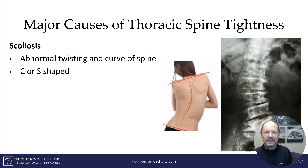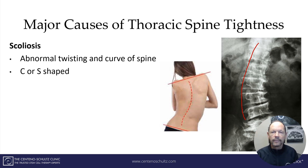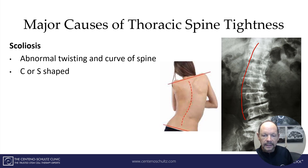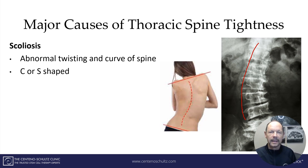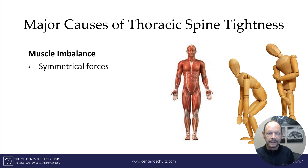The next cause is scoliosis, depicted here. It's basically an abnormal twisting and curve of the spine — you can either have a C-shaped or an S-shape. Here's what you may see in an individual: just a crooked back. Different levels of scoliosis can certainly cause thoracic spine tightness.